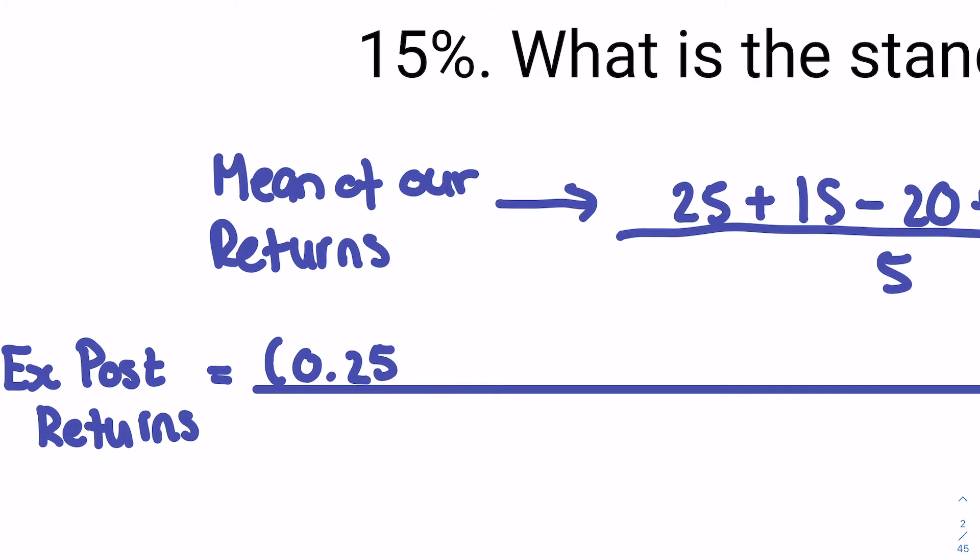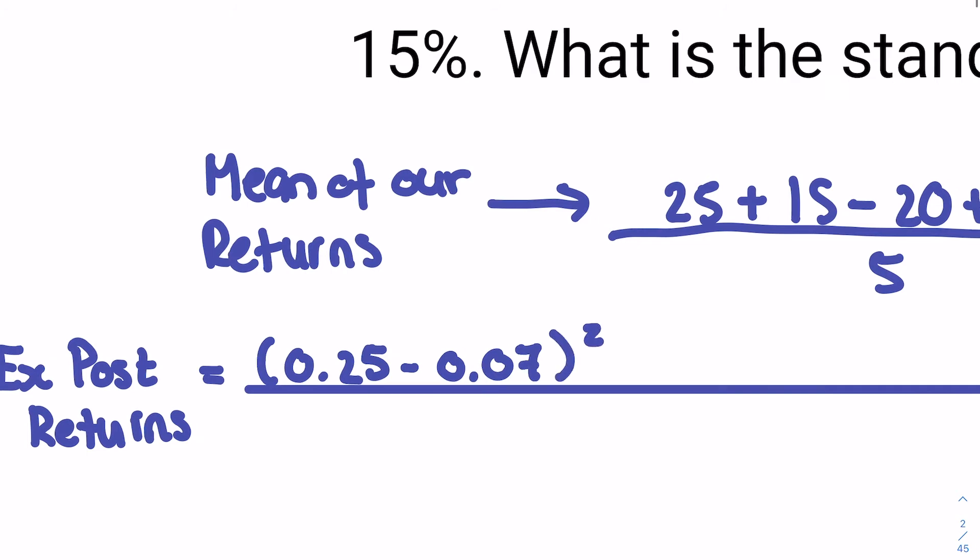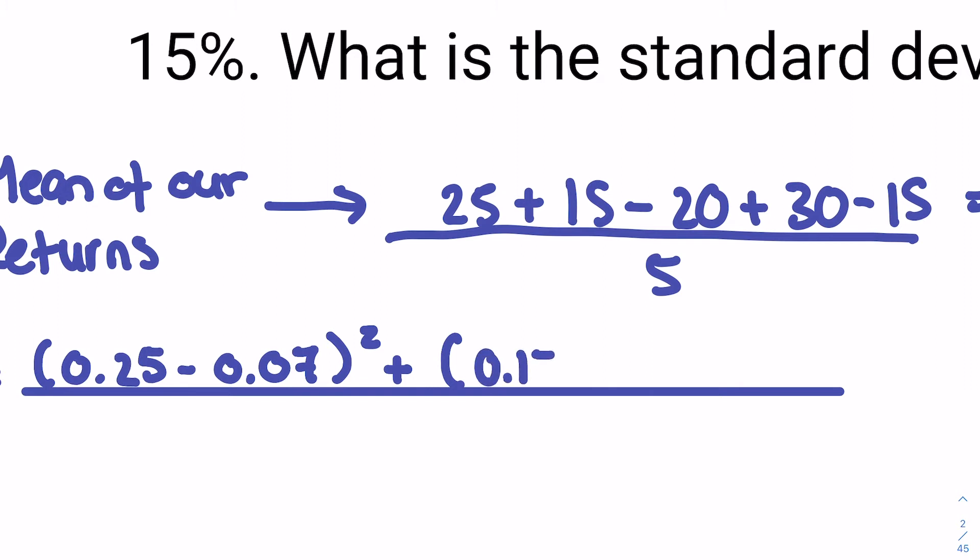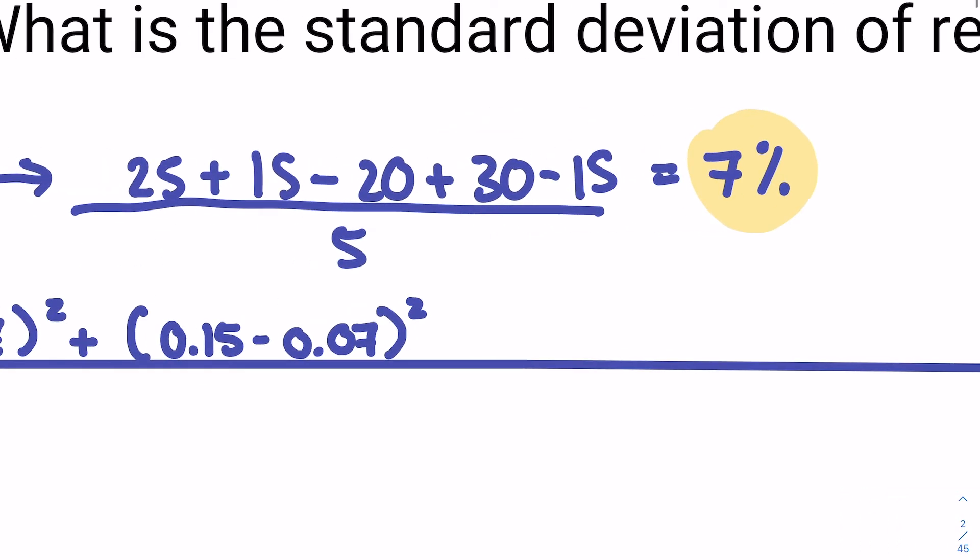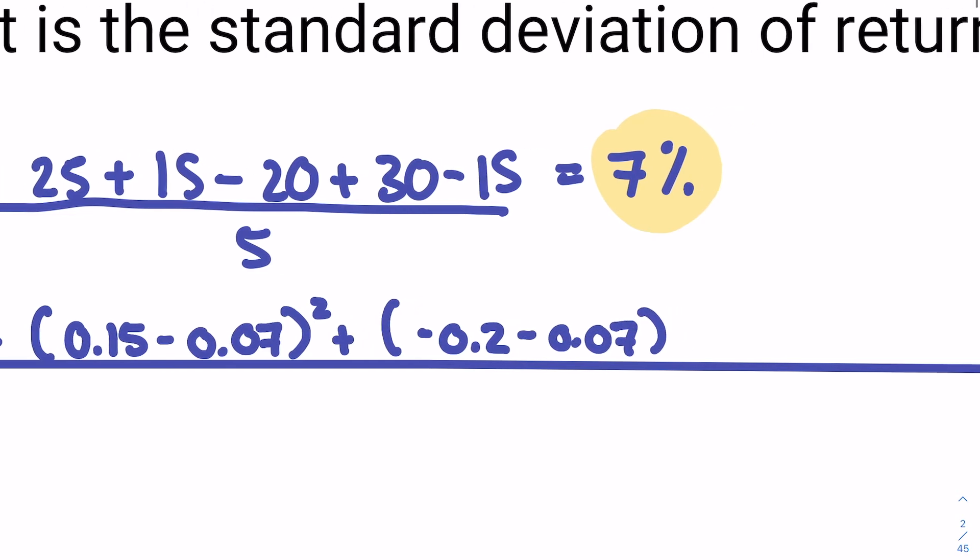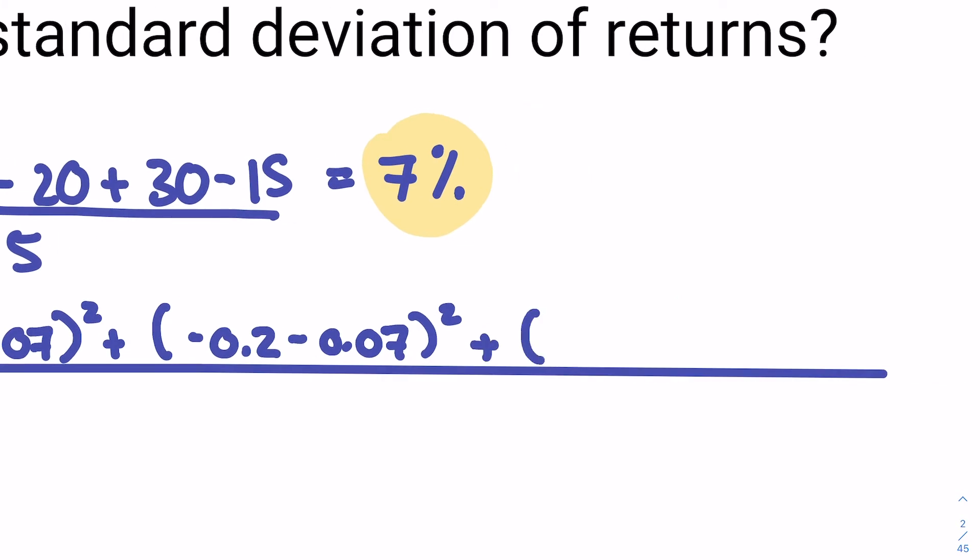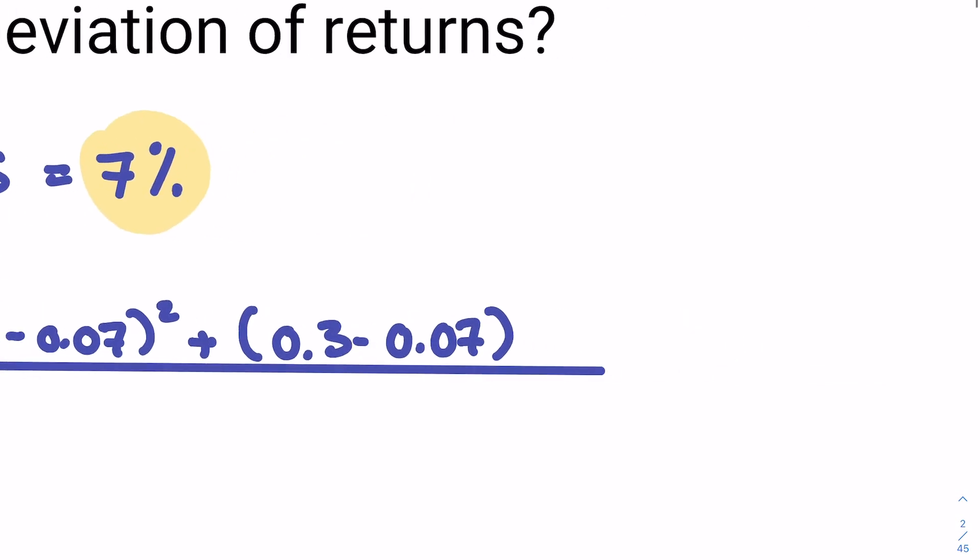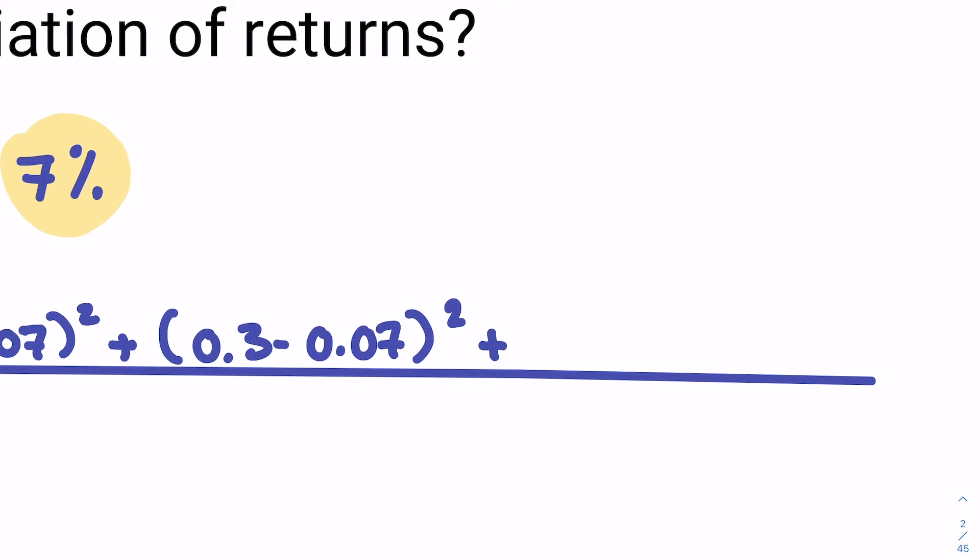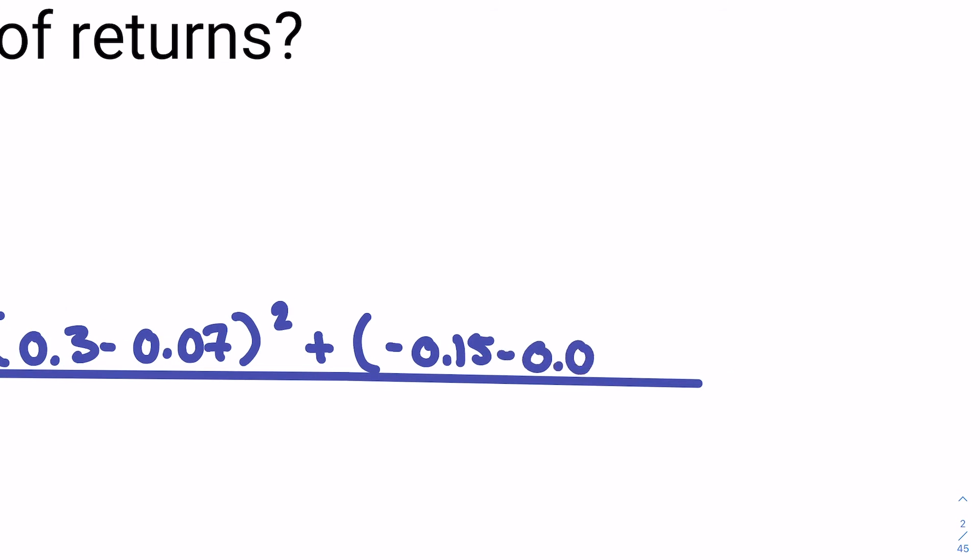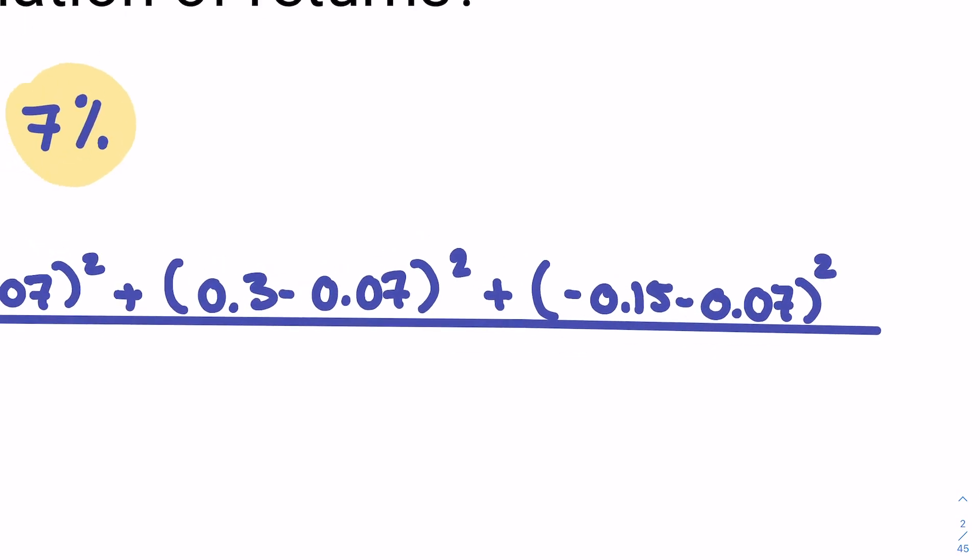We have our first return, so we have 0.25, so 25%, minus our mean to the power of 2. Then we're going to rinse and repeat. So now we're going to do (0.15 - 0.07)^2. Then we're going to extend all the way. So now plus (-0.2 - 0.07)^2 plus (0.3 - 0.07)^2. And then the last, but definitely not least, minus 0.15, so that's -15%, minus our mean.